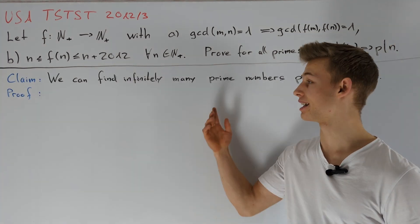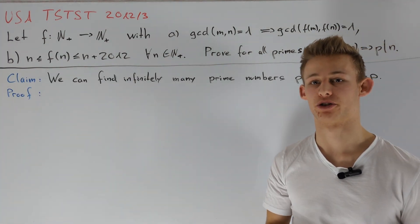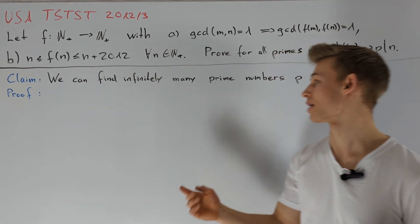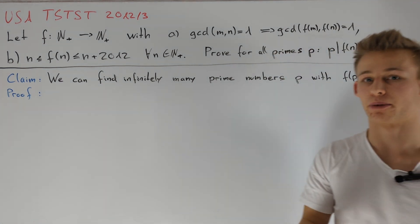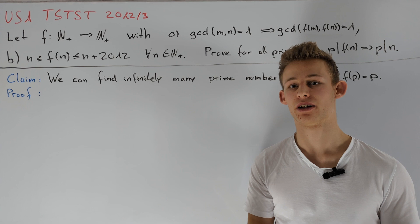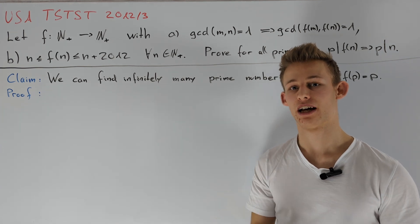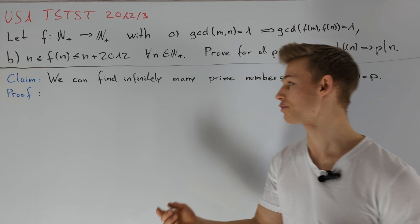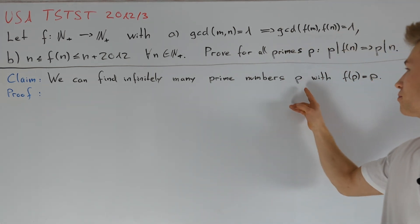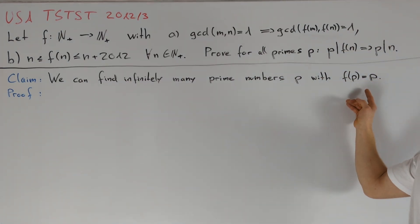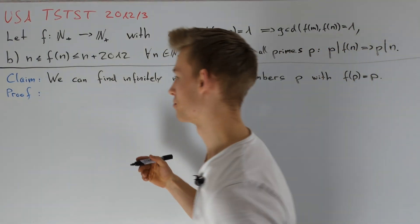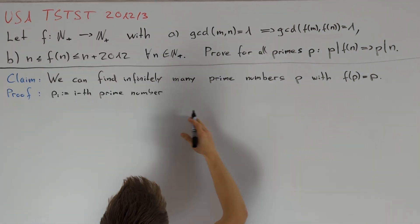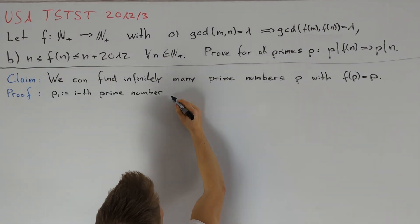To prove our claim, we use a similar approach as before. Namely, we try to find prime numbers p such that p+1, p+2, ..., p+2012 have a high number of prime divisors, and then use this to prove that f(p) must equal p. Let us denote the i-th prime number by pi.